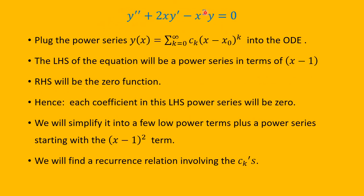We're going to plug the series y(x) = Σ cₖ(x−1)^k into the differential equation. The left-hand side will become a power series in powers of (x−1), and the right-hand side remains 0. The only way a power series can equal the zero function is if all its coefficients are zero. We'll simplify into a few low-power terms plus a series starting with the (x−1)² term, and find a recurrence relation for the cₖ's.